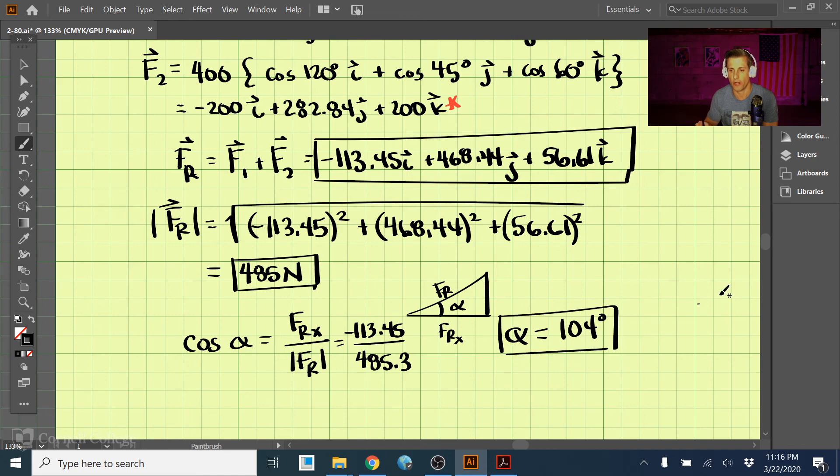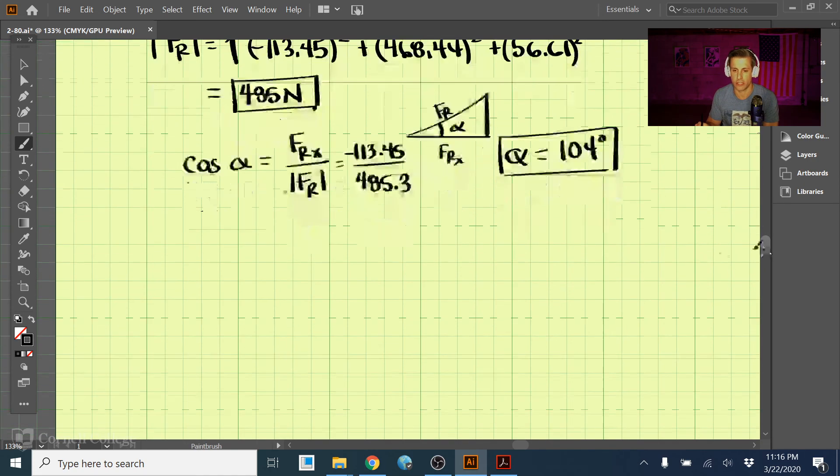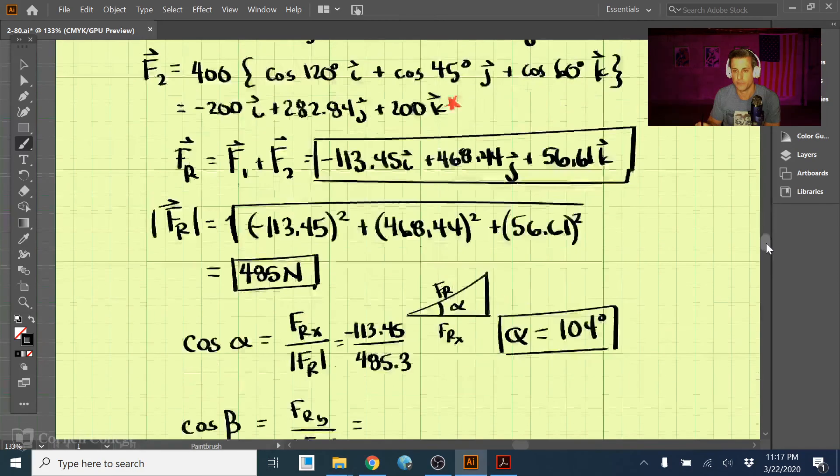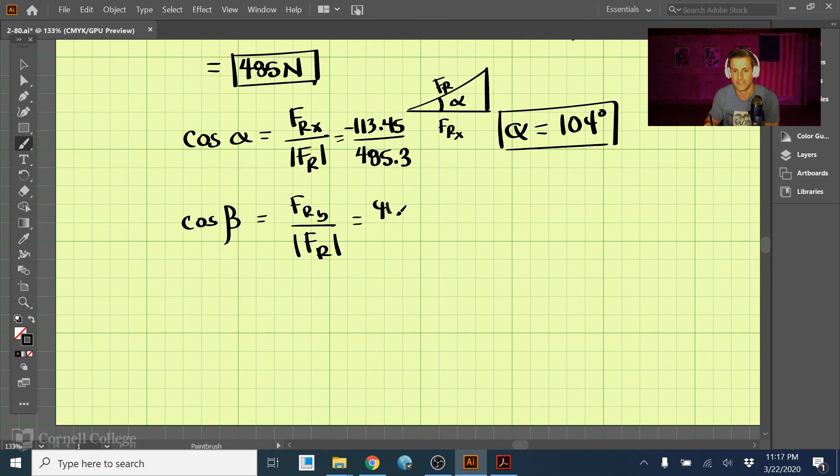So that is one of our coordinate direction angles. Now we do the same thing for our cosine beta, and that is just going to be Fry over the magnitude Fr. So that is 468.44 divided by 485.3, and then we divide that out, take the inverse cosine just like we did here, and beta comes out to be 15.1 degrees.